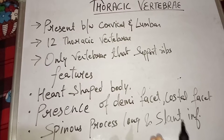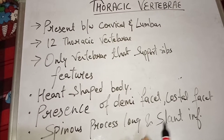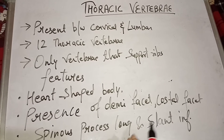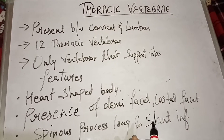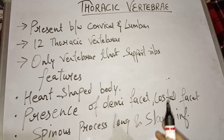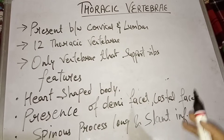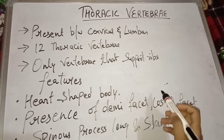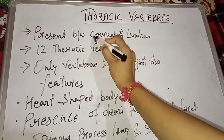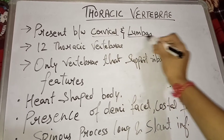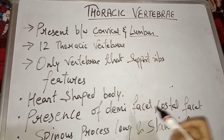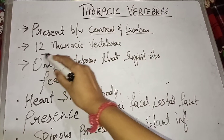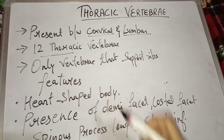Hello everyone, myself Soumya Tiwari, welcome you all to my YouTube channel. In this video we will be talking about thoracic vertebra. Thoracic vertebra is present between cervical vertebra and lumbar vertebra, and there are a total of 12 thoracic vertebrae present in our body.